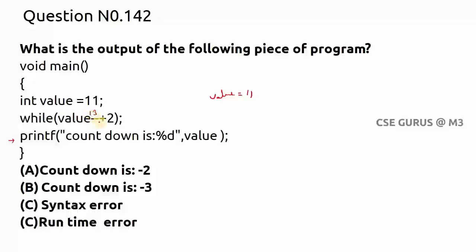If the condition is 0, it exits the while loop; if non-zero, it repeats. With value 10: 10 + 2 = 12, non-zero, value becomes 9. With value 9: 9 + 2 = 11, non-zero, value becomes 8. The pattern continues — first the current value plus 2 is evaluated as the condition, then value is decremented.